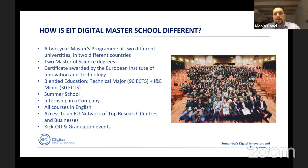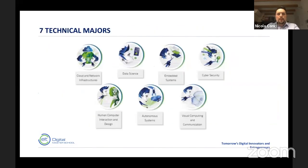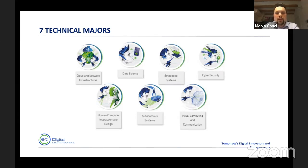The program consists of a blended education format including a technical major of about 90 credits, plus what is called an IND minor of 30 credits. This also includes a summer school, a mandatory internship in a company, all courses held in English, and access to the EU network of top research centers and businesses. There are seven technical majors: cloud and network infrastructures (a brand new program), data science, embedded systems, cybersecurity, human interaction and design, autonomous systems, and visual computing and communication.